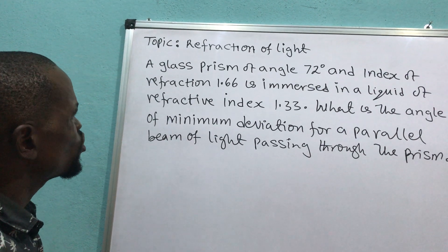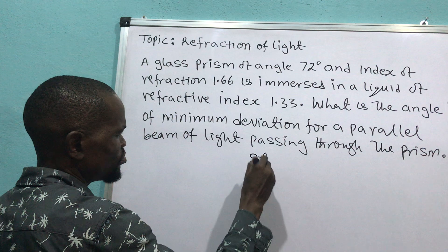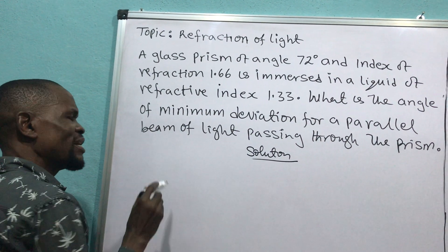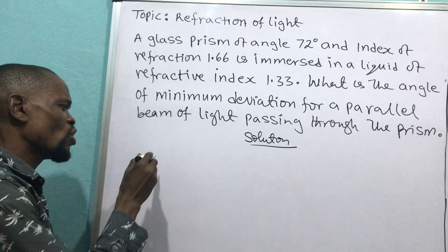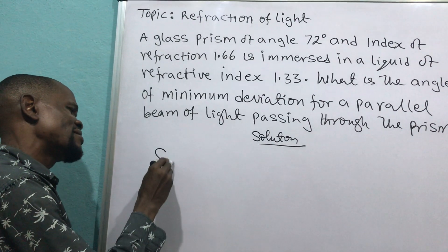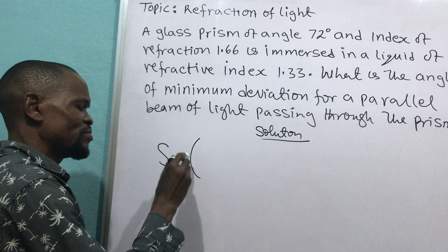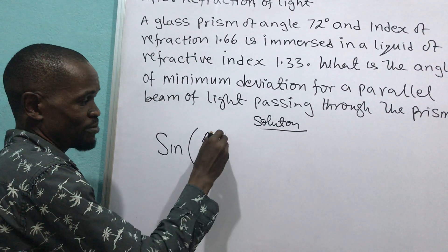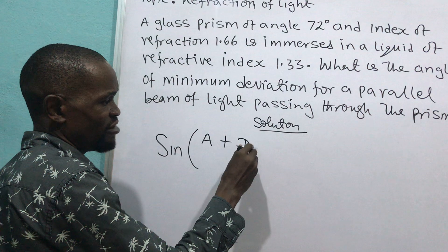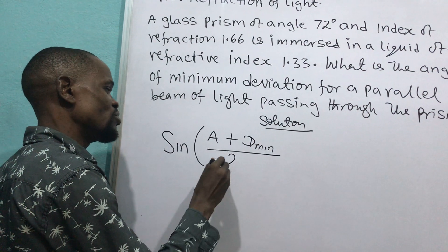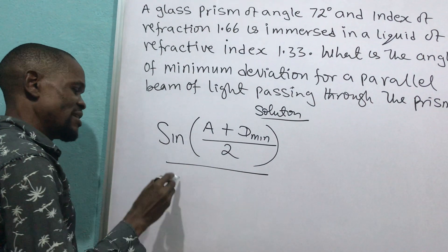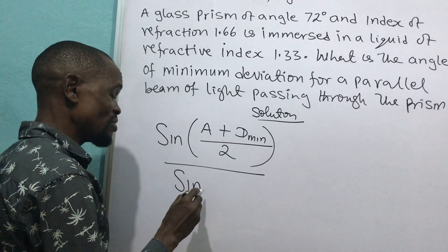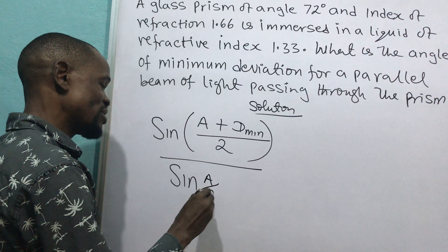Let us go straight to the solution. And this is where we are going to use Snell's law, which says sine of the incident angle — in this case, the incident angle becomes A plus minimum deviation all over 2 — divided by the refraction angle, which is A divided by 2 in this case.